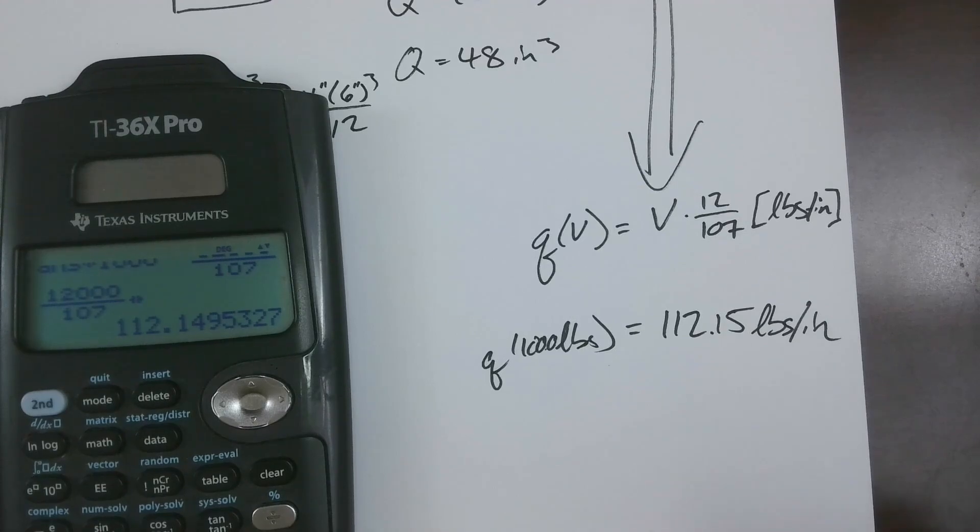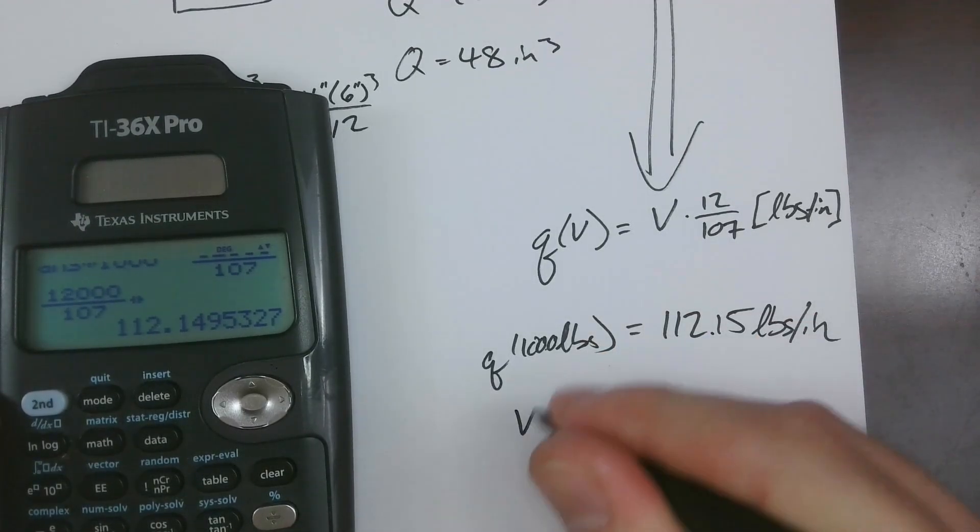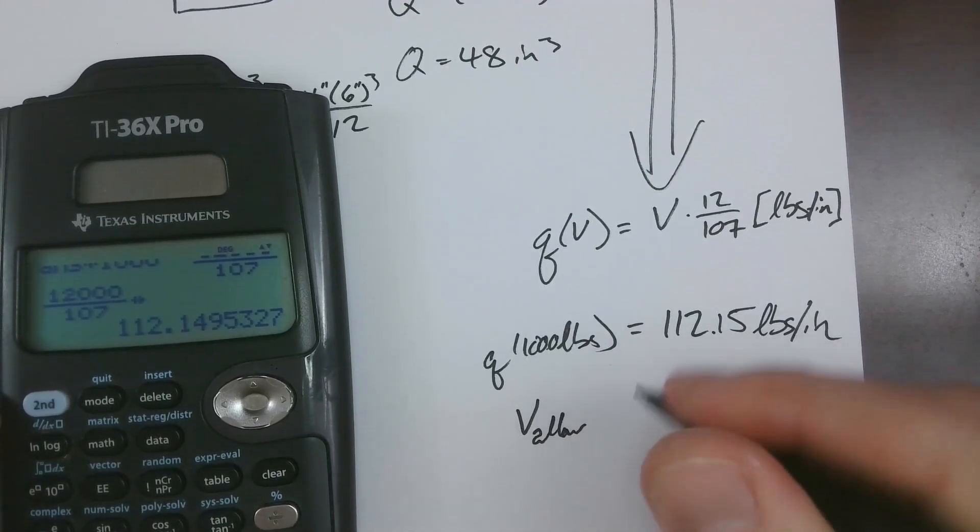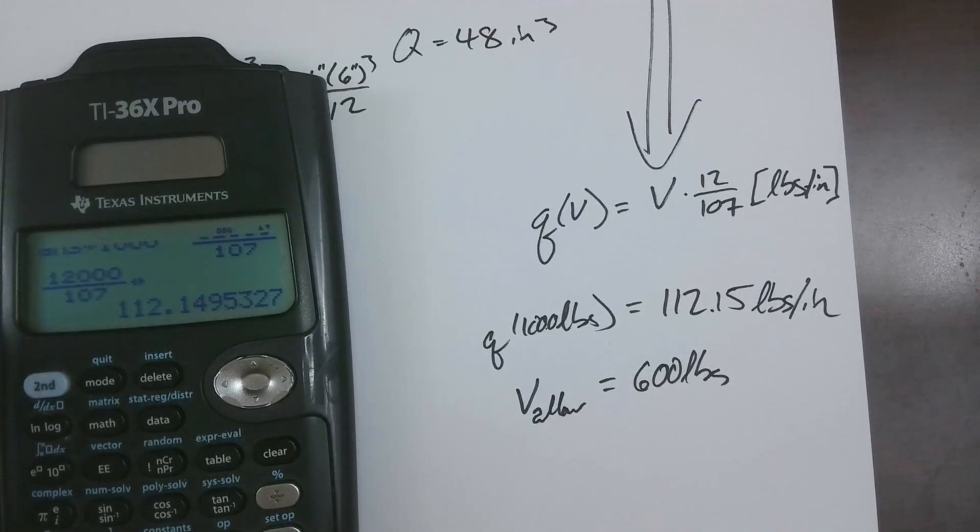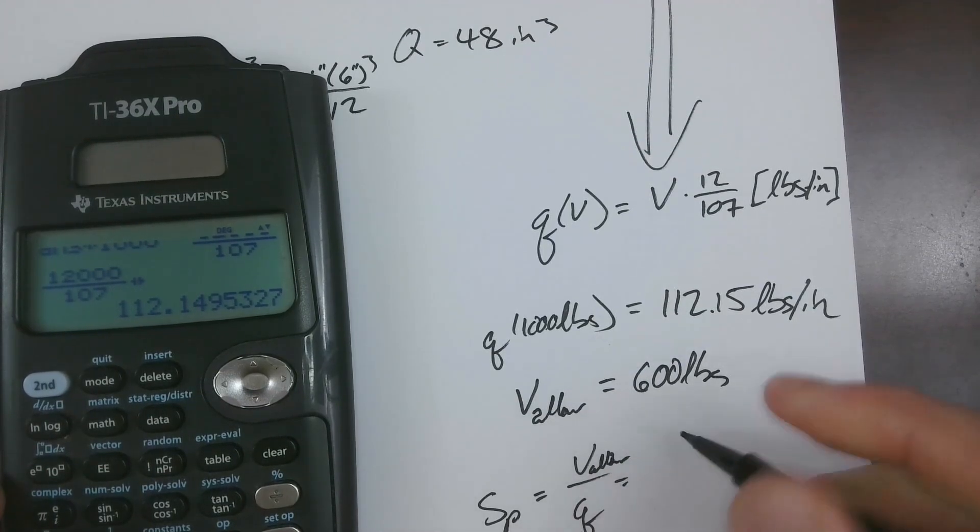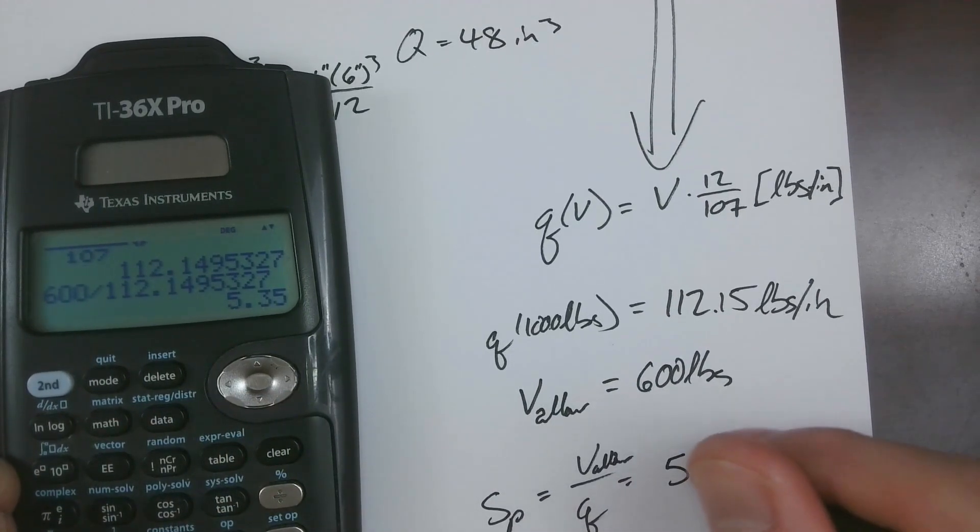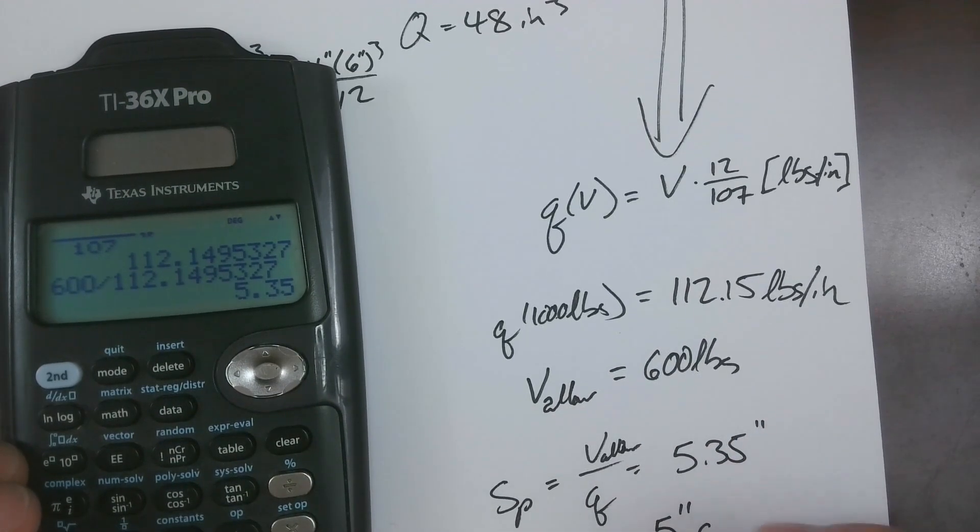So we've got pounds per inch, right? And we're trying to figure out a nailing pattern. Let's say we've got a really strong nail here, and we've got our shear allowable for one nail is equal to 600 pounds. How often on center do we need those? Well, we can just take spacing equals v over q, the allow, and we'll get 600 divided by our 112, 5.35 inches. So I would obviously call that out as 5 inches on center.